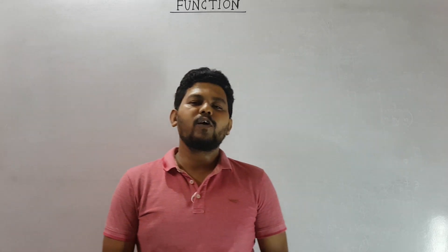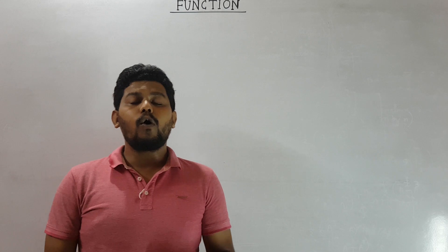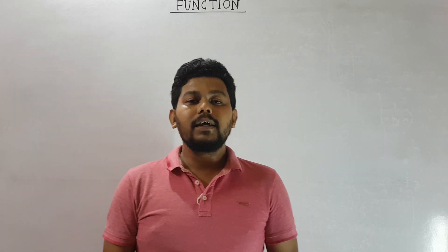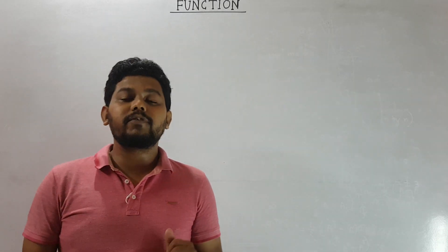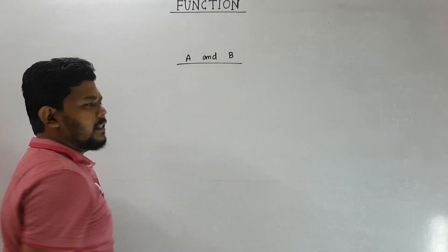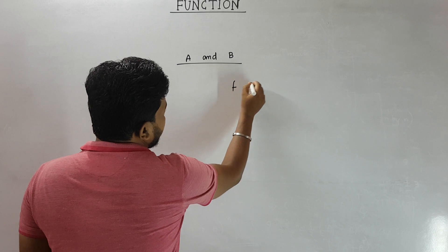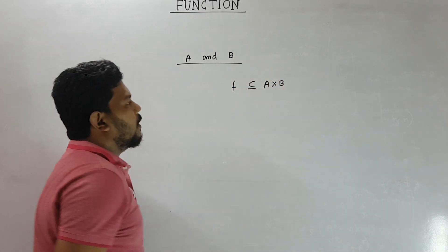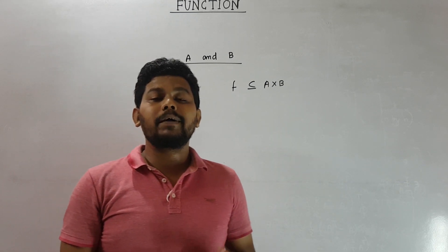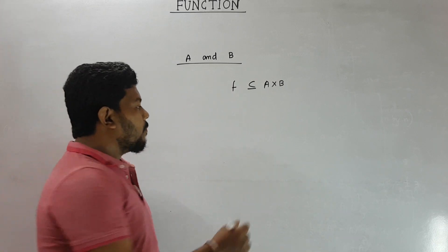Hello viewers, today's topic is functions. A function is a relation in which no two ordered pairs can have the same first component. If we make a relation from set A to set B, and we can associate each and every element of set A to one and only one element of set B, then this relation is called a function or a mapping from set A to set B.